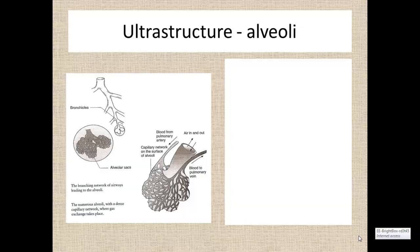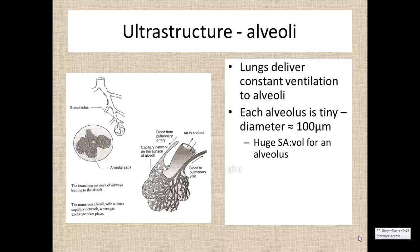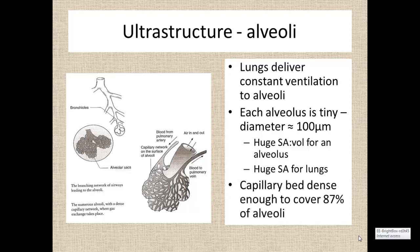Looking at the ultrastructure — the detail at a small level — the lungs deliver constant ventilation to the alveoli. Each alveolus is tiny, about 100 micrometres in diameter, which is one tenth of a millimetre. That gives each alveolus a huge surface area to volume ratio, giving us a very large total lung surface area. Also very important is the blood supply: the capillary bed must be very dense, covering a lot of the alveolar surface area, otherwise the surface area generated by the alveoli will be wasted.